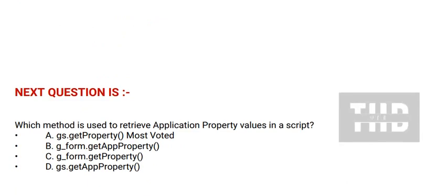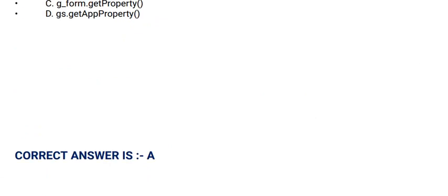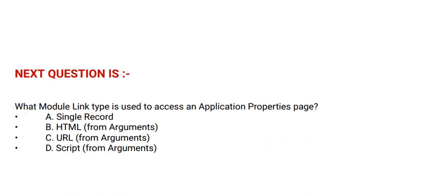Next question: Which method is used to retrieve application property values in a script? Option A: gs.getProperty. Option B: g_form.getAppProperty. Option C: g_form.getProperty. Option D: gs.getAppProperty. The correct answer is Option A.